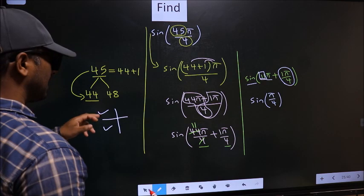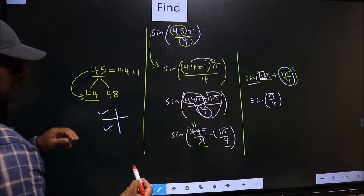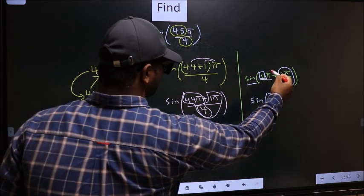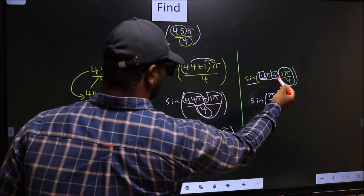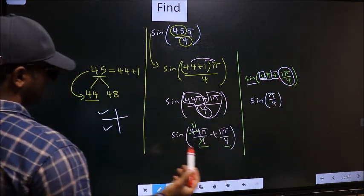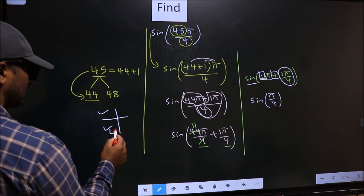Now, to decide in which quadrant does the angle lie, we should look at this symbol. Here, we have plus. So, the angle lies in the third quadrant.